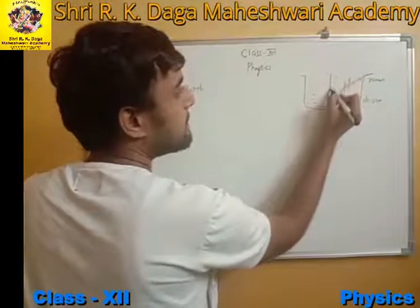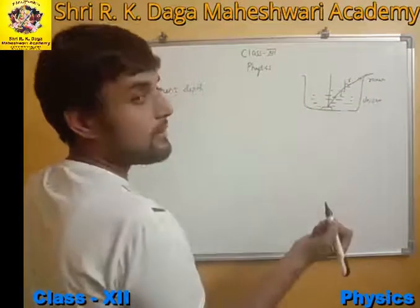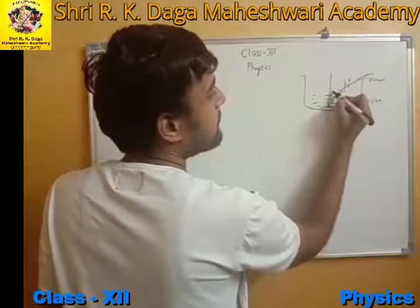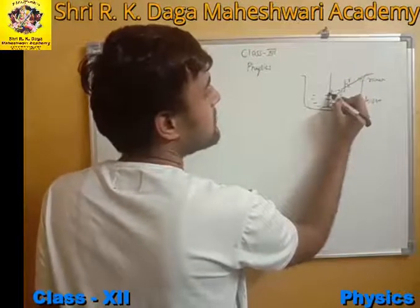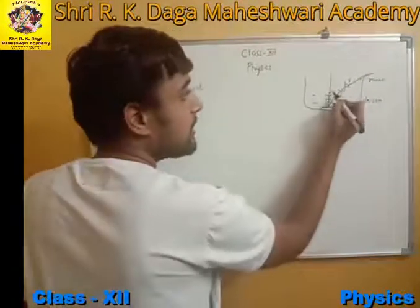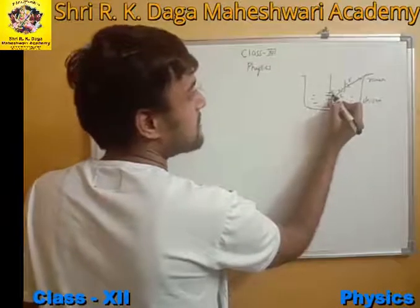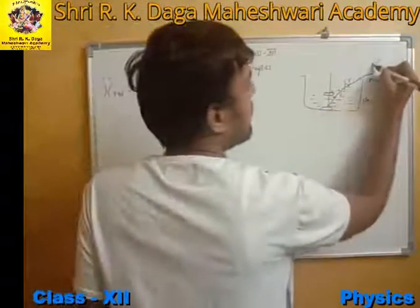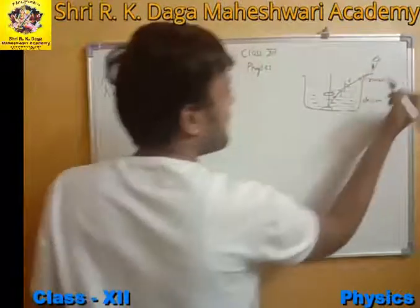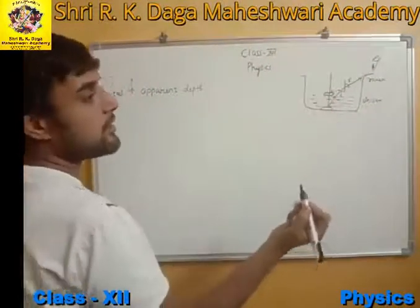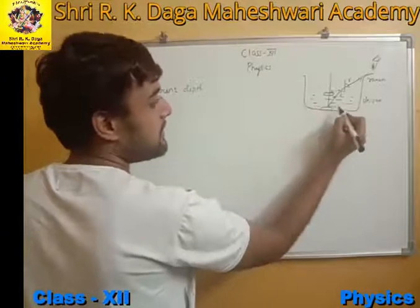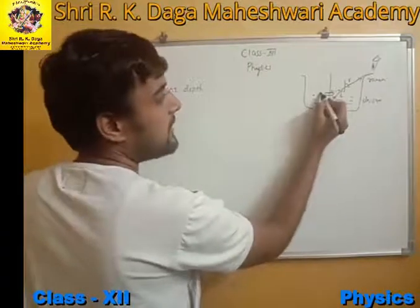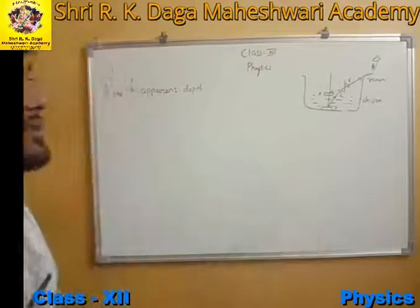If I draw a normal here and extend the refracted ray back, the coin will appear to us at a position slightly above its actual position. So P is the actual object position, and P' will be the apparent image position.